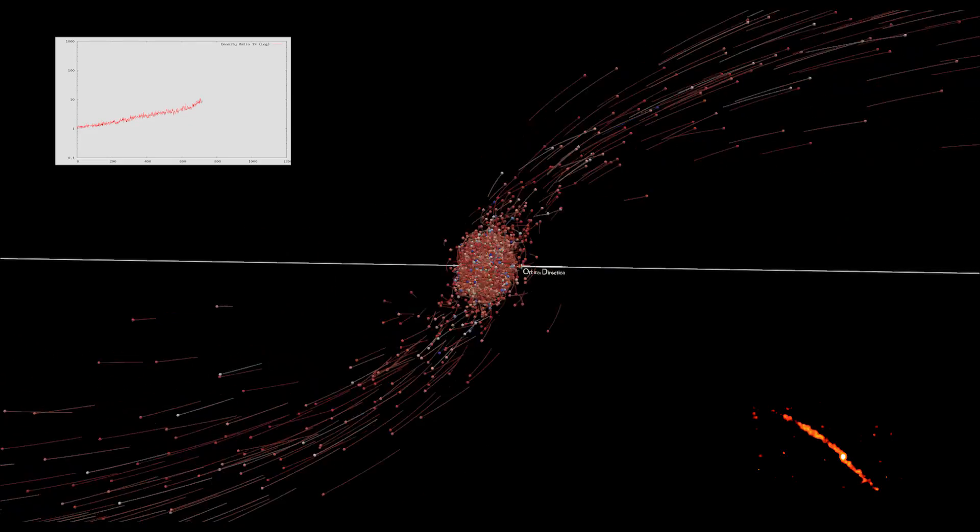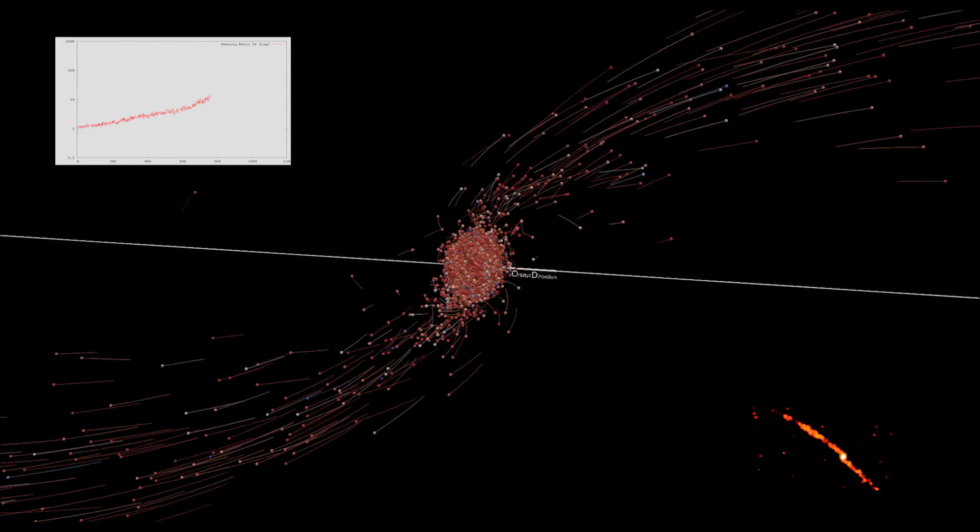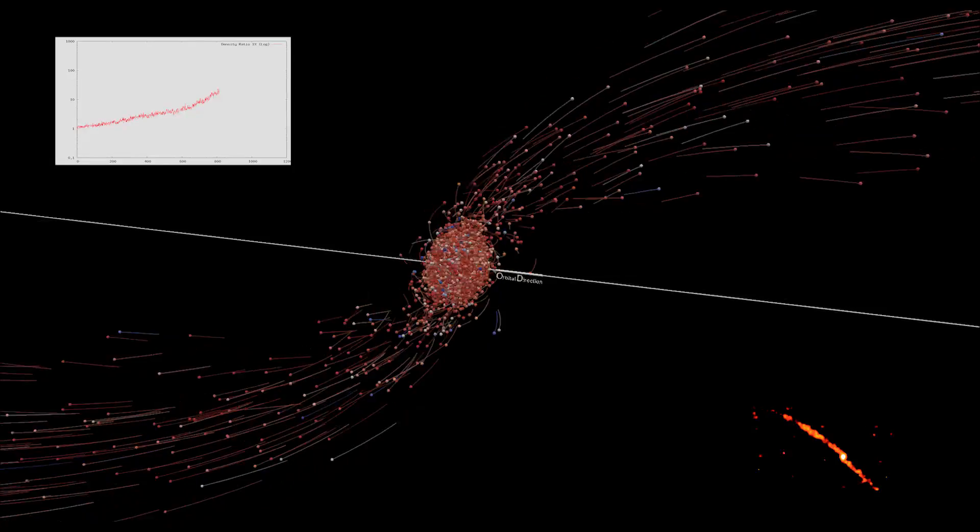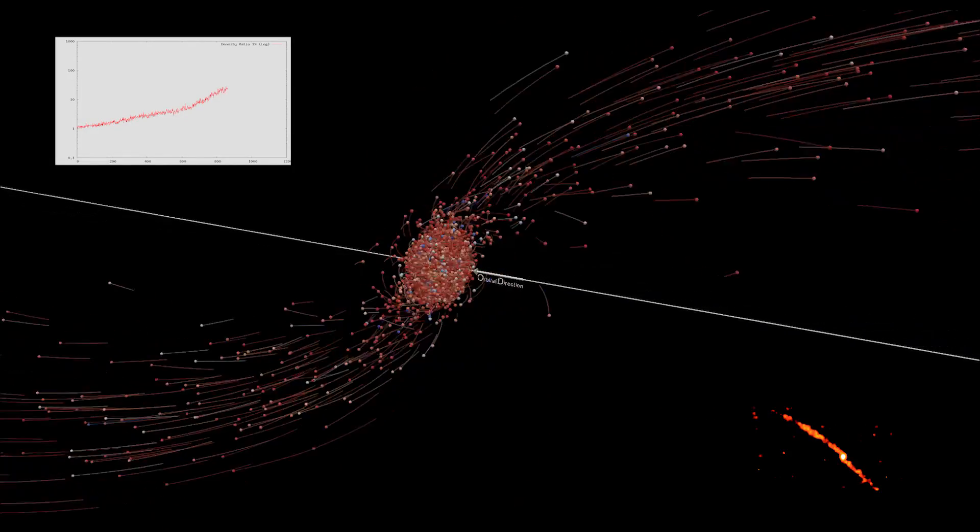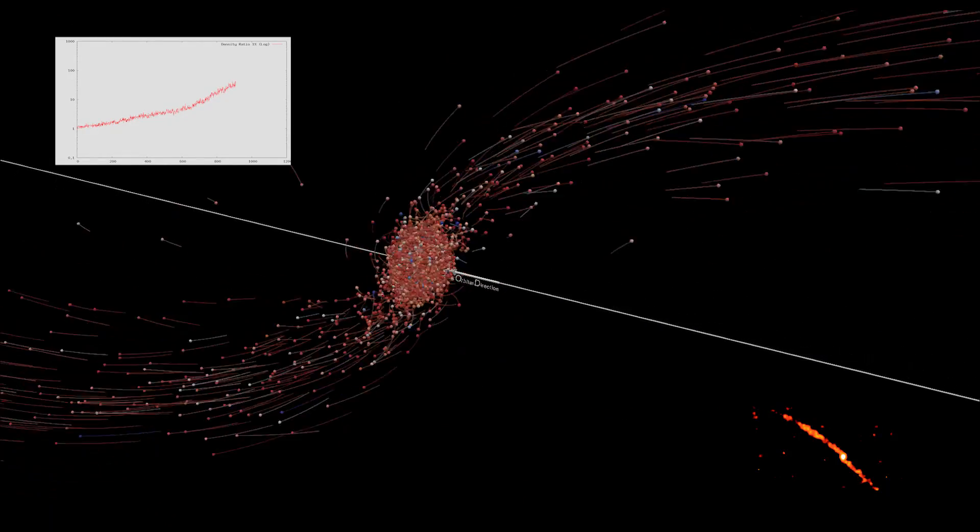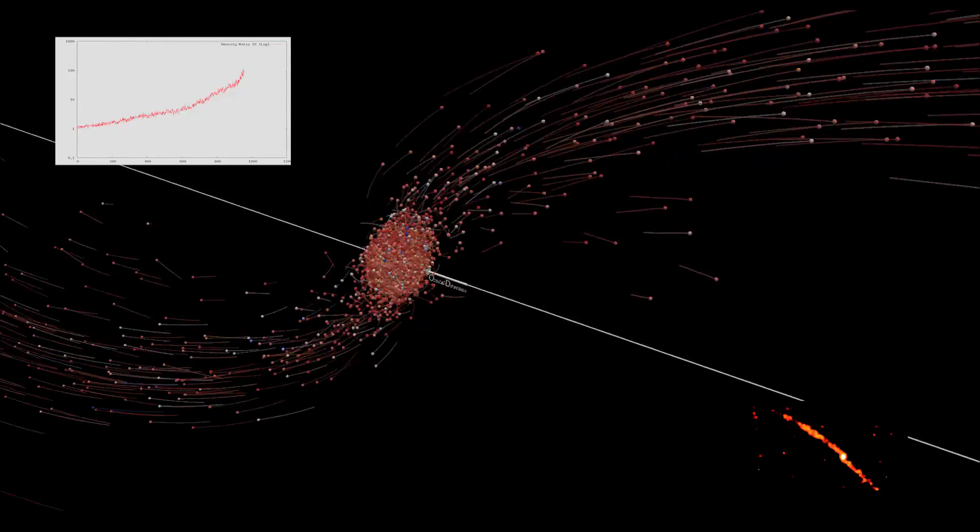As a cluster continues to evolve, its internal structural and kinematical properties change. In particular, during part of a cluster evolution, the central core contracts and becomes increasingly dense.